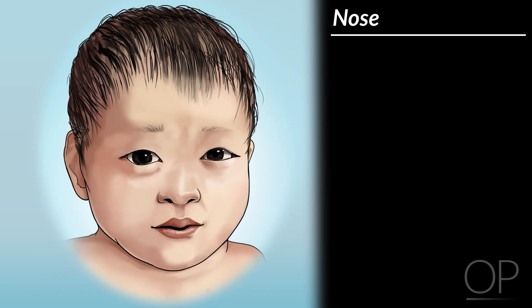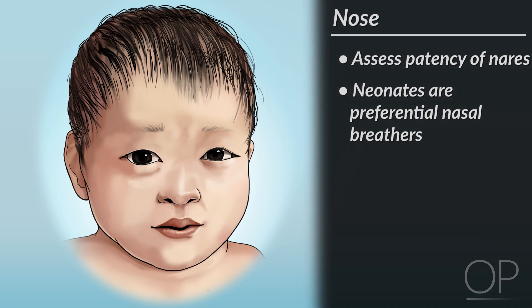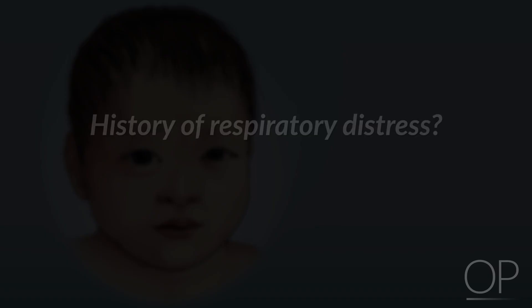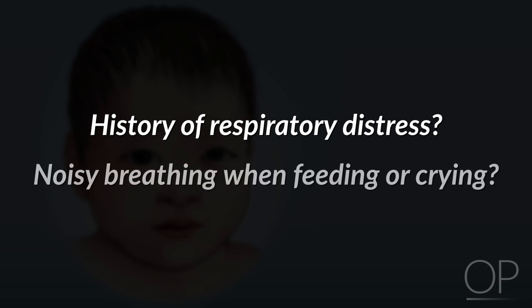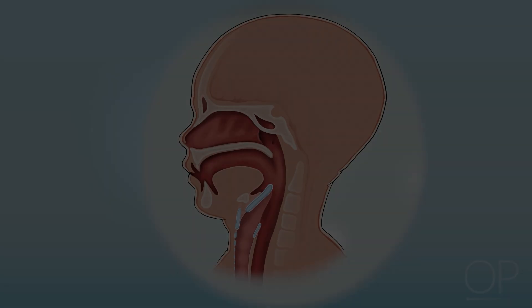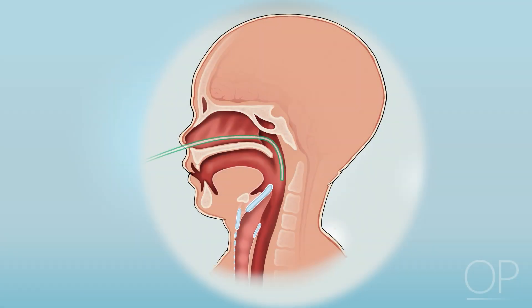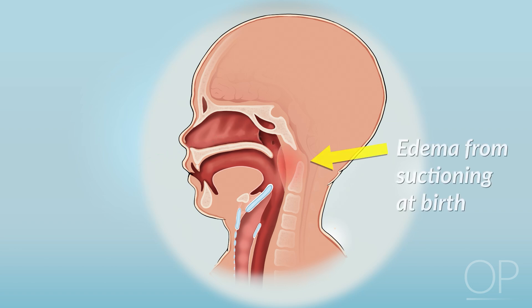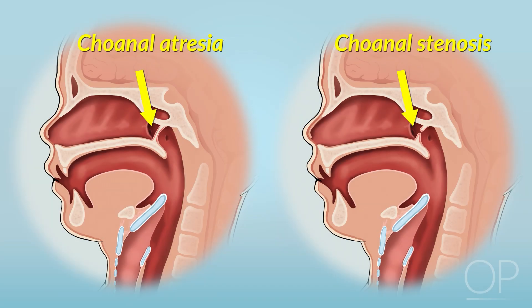Next, we examine the nose. In the newborn, the most important feature to assess is patency of the nares, as neonates are preferential nasal breathers. If there is any history of respiratory distress or noisy breathing when feeding or crying, patency can be proven by passing a small French catheter through each naris. It is common for newborns to have transient obstruction from edema related to suctioning after birth, but the differential also includes choanal atresia or choanal stenosis, an improper formation or narrowing of the nasal airways.